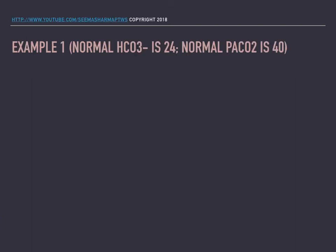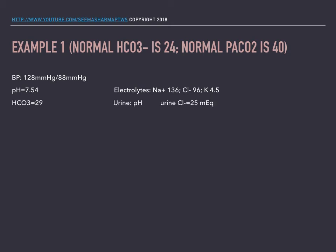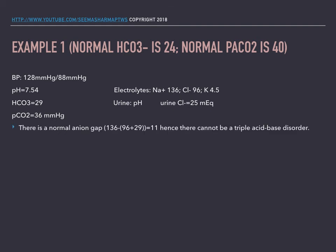Here's an example using 24 as normal bicarbonate and 40 as normal pressure of carbon dioxide. For this case, I've given the blood pressure, the pH, the electrolytes, the bicarb concentration, the urine pH, the urine chloride, and the pressure of carbon dioxide. We check the anion gap first, and it's normal. So there cannot be a high anion gap metabolic acidosis present, and also there cannot be a triple acid-base disorder.